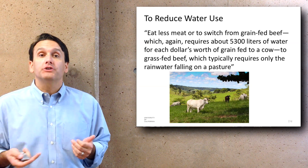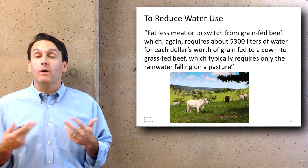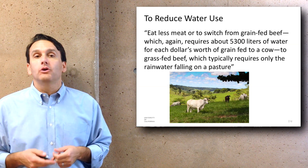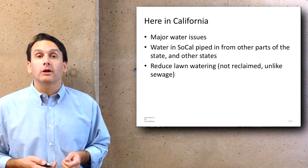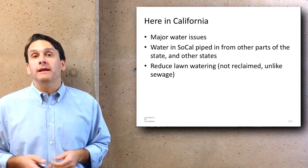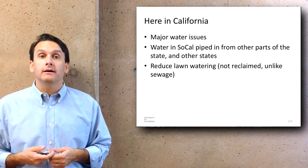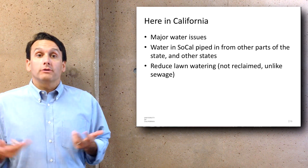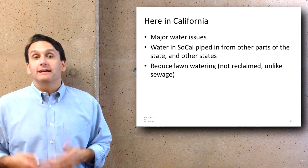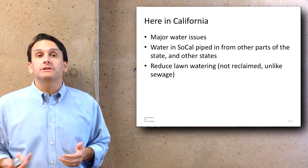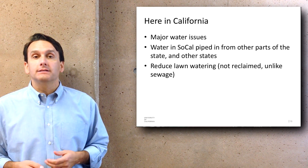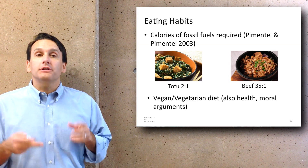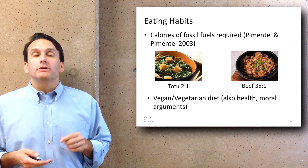To reduce water use, the article encourages people to eat less meat or switch from grain-fed beef — which requires 5,300 liters of water per dollar's worth of grain fed to a cow — to grass-fed beef, which typically requires only the rainwater falling on a pasture. Here in California we face major water issues, partly tied to meat production. Water in southern California is typically piped in from other parts of the state and other states. Other ways to reduce water usage include reducing lawn watering, since water used on lawns is not reclaimed unlike water used for sewage.